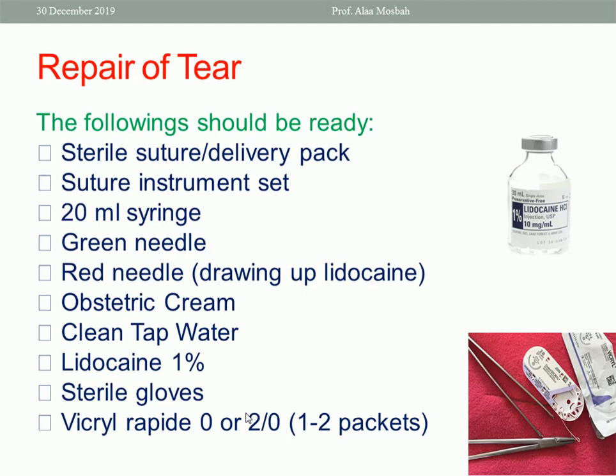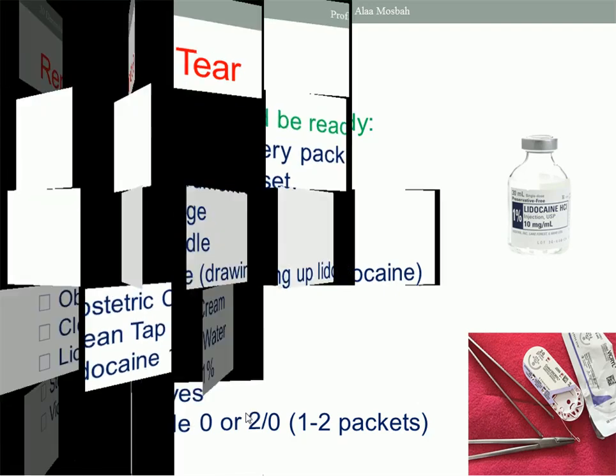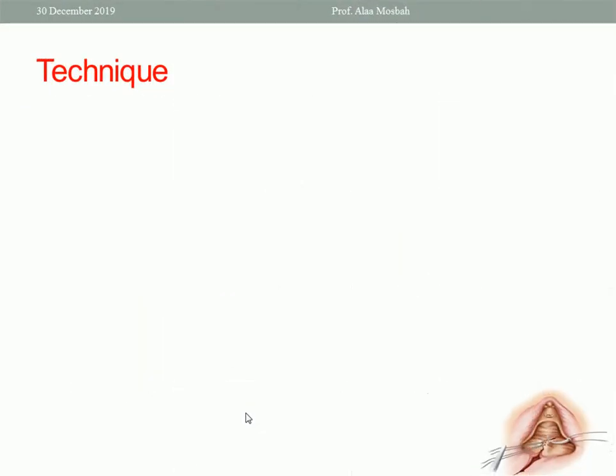What is needed to complete second degree perineal tear repair: sterile suture and delivery pack, suture and instrument set, needles, antiseptic cream, clean tap water, 1% lidocaine, sterile gloves, and Vicryl R0 and 2-0, one to two packets. Second degree perineal tear repair simulates the repair of episiotomy. Swab and clean the perineum with clean tap water, apply antiseptic solution, then use a continuous non-locking suture technique to oppose each layer — though interrupted may be used if clinical judgment requires.